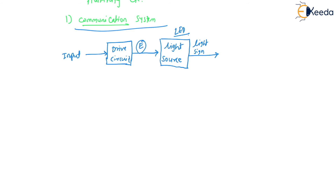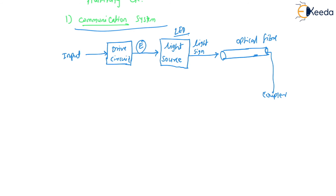The drive circuit is connected to the light source, which may be an LED or any other light source. The main function of the light source is to convert the electrical signal into a light signal. This light signal created by the LED or light source is then fed to the optical fiber, which carries it to the desired destination.